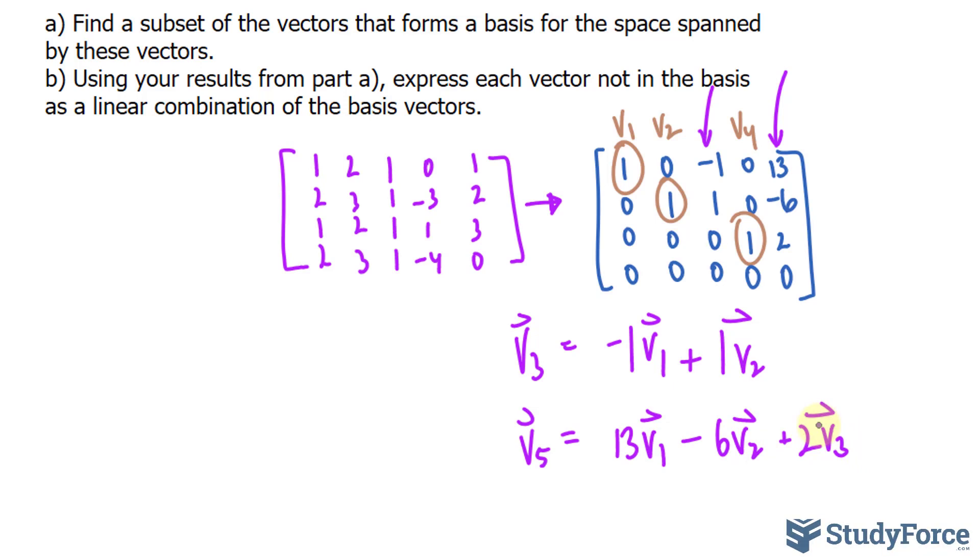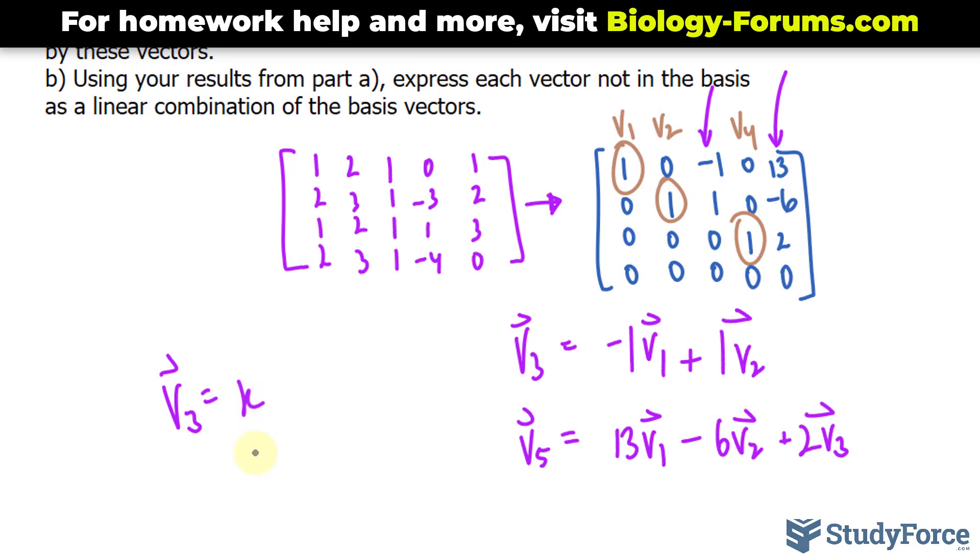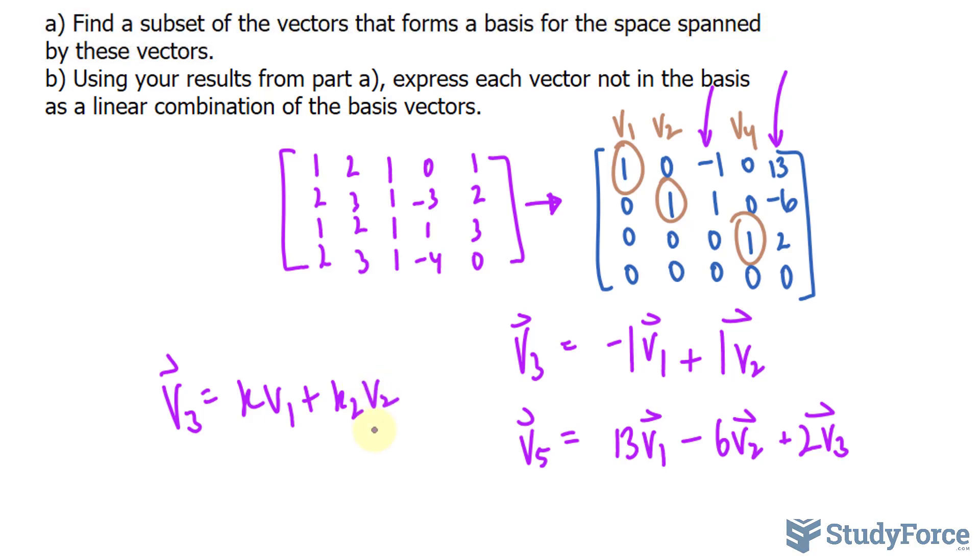Now just be mindful that normally when we write a linear combination, we use, for example, V3 is equal to a scalar K times V1 plus another scalar K2 V2. But since this is already in row echelon form, we can skip that and we can tell right away that it's negative 1 and 1. And similarly, the same thing can be said about this vector. We could have written it as scalars multiplied to the vectors, but we don't need to do that because this is already in row echelon form.